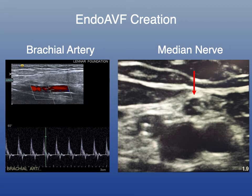Another important consideration when creating endo AVFs is that you need to avoid the median nerve. If you've ever accessed the brachial artery or basilic veins in the biceps region, you will always see this structure — the nerve — and you need to avoid it when accessing these vessels.